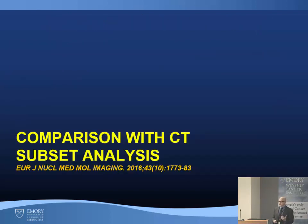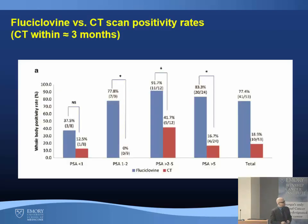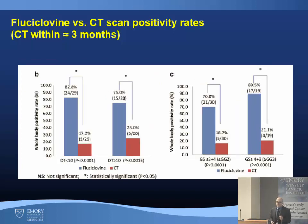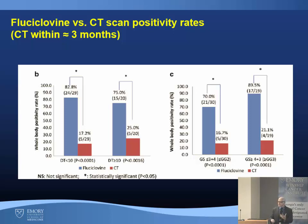We also compared fluciclovine to CT: at every PSA level, fluciclovine had a higher positivity rate than CT. But absolute PSA is only part of the story — PSA kinetics are very important. When doubling time is shorter, the positivity rate goes up. With more aggressive original disease, such as Gleason 4+3 or greater, we see a higher positivity rate, implying more aggressive recurrence. This was significantly better than CT at all levels of PSA kinetics.